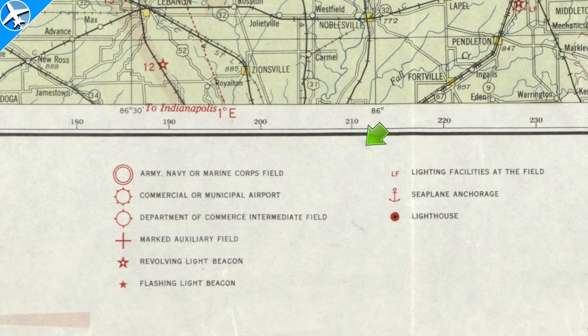Airport markings are also quite different than what we see today. There are also flashing light beacons that were part of the lighted airway system. The reverse side of the map showed detailed information about particular airports.